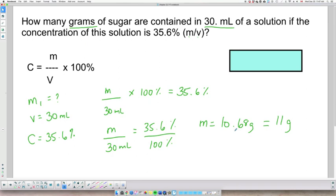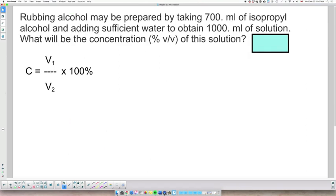If we look at case number three, case number three involves a ratio of volume over volume. And it says, rubbing alcohol may be prepared by taking 700 mL of isopropyl alcohol and adding sufficient water. So we're diluting it, right?